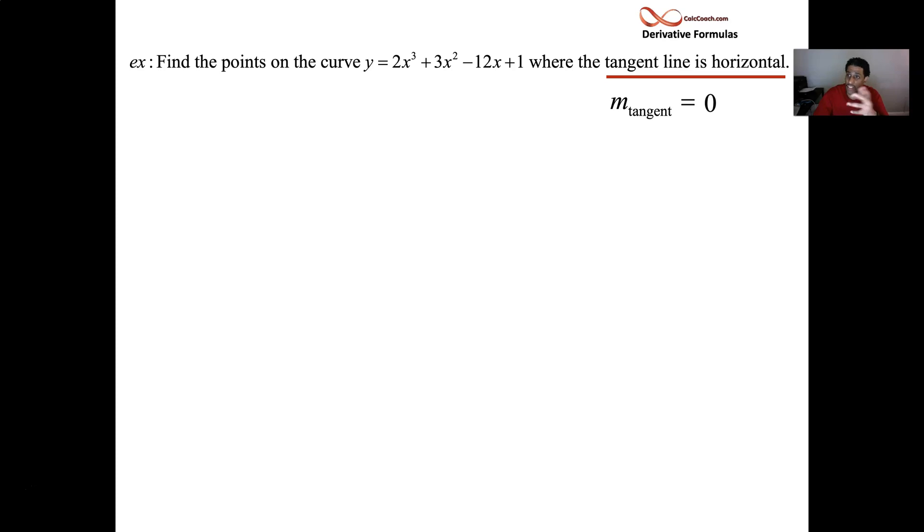Okay, so we're going to find the expression for the derivative, set it equal to zero. Okay. And we'll just use the sum and difference and the power and the constant multiple rule. We'll be able to read through really quickly what the derivative is in no time flat. 6x squared plus 6x minus 12. That's what the derivative is.